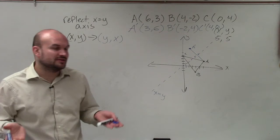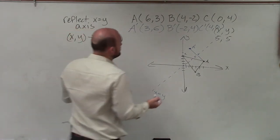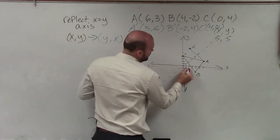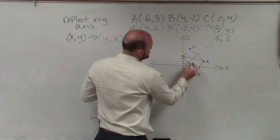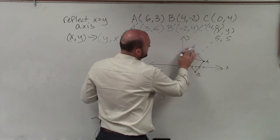So now we know what the new image points are. Let's go and plot them. So A is 3, 6. So over 3, up 6. And you can see I was pretty close. So that is now A prime.